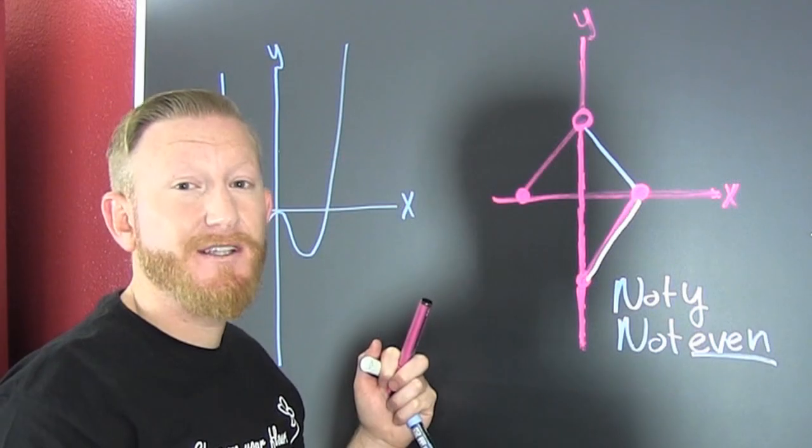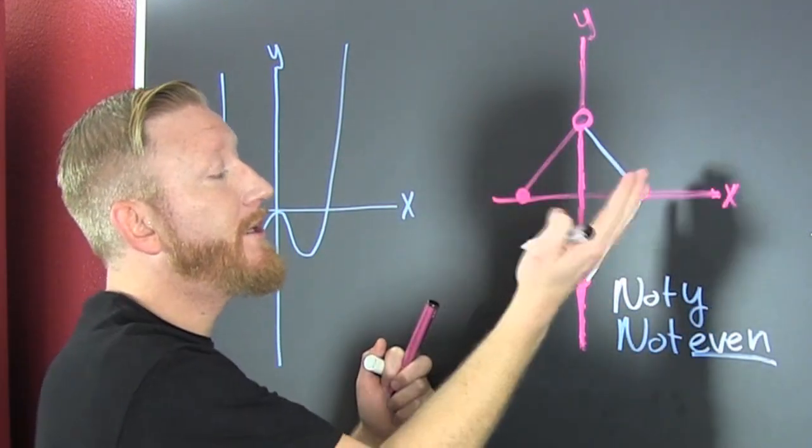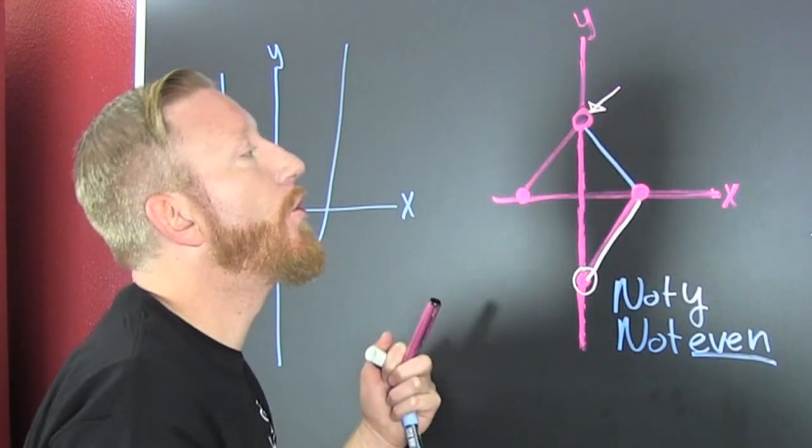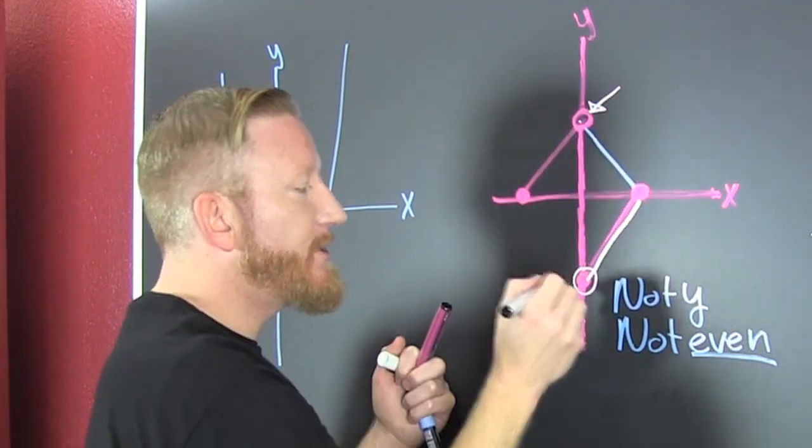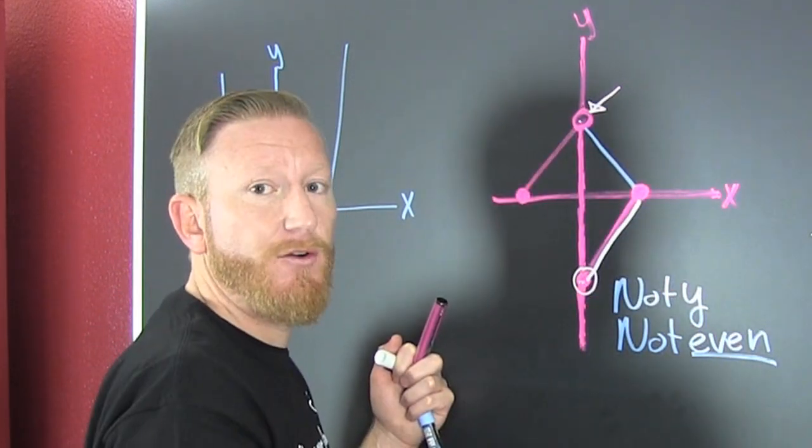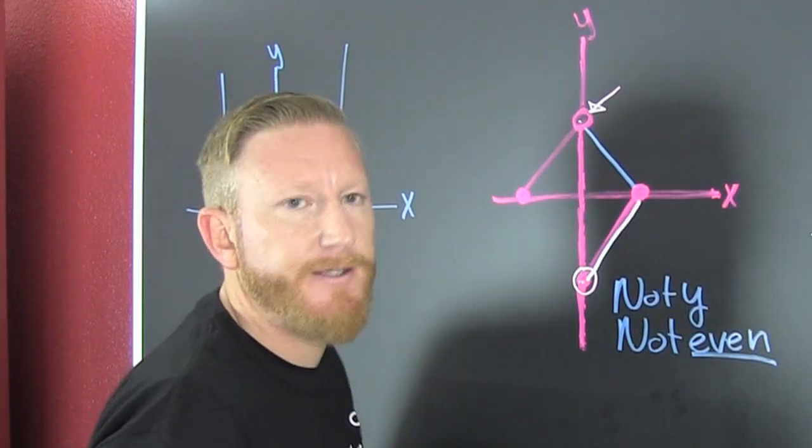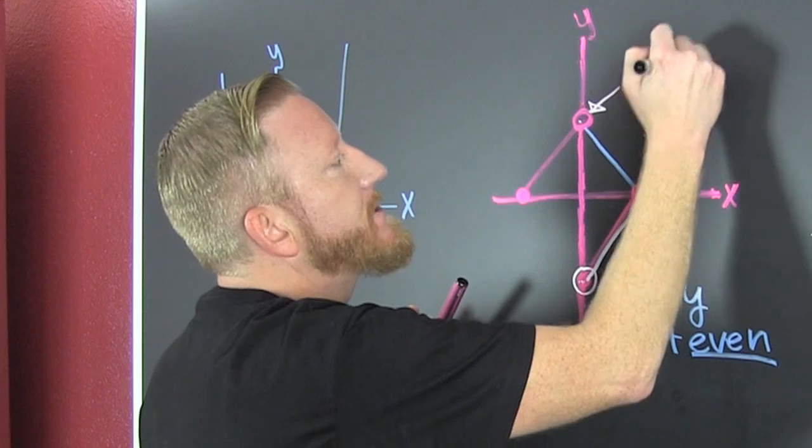Does it lie on itself? Yeah. Except one thing. That right there. That hole. That hole isn't reflected down here with that hole. So, that one single point just ruined the oddness. So, this is not odd.